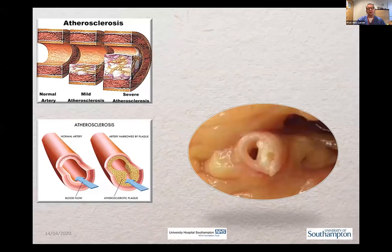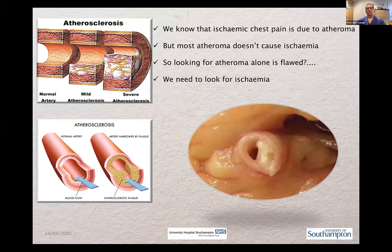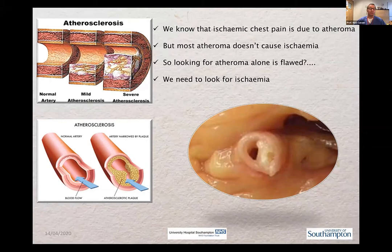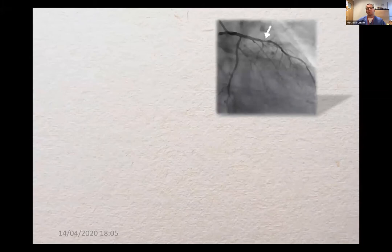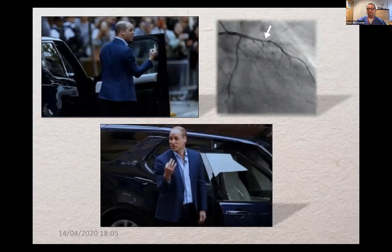We know that atheroma is important, and that ischemic chest pain is almost always due to atheroma build-up in the coronaries. But we also know we all develop a lot of atheroma — and it very often doesn't cause any ischemia. From those two facts, looking for atheroma alone is flawed, because you can have a lot of atheroma without ischemia. When doing an angiogram — invasively or non-invasively — you see atheroma and don't really know what that means. Does the atheroma you see actually cause the symptom? What we see is subject to our own interpretation, and we often interpret it incorrectly.